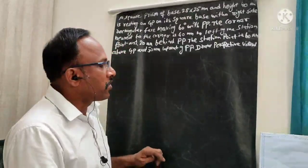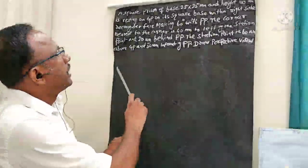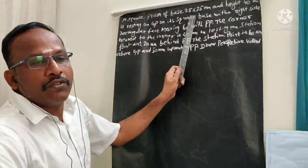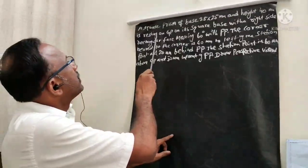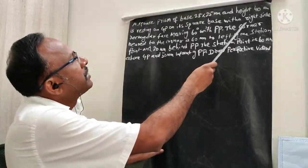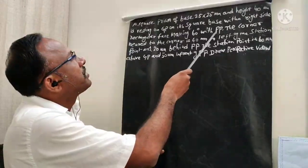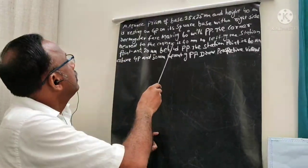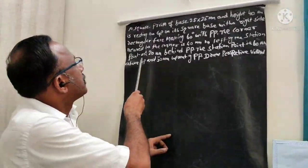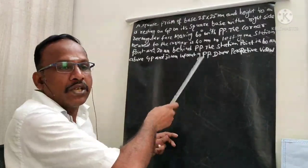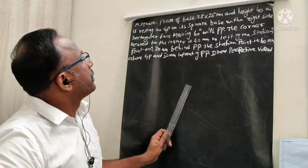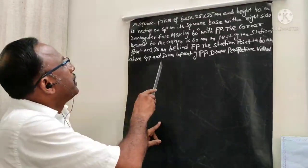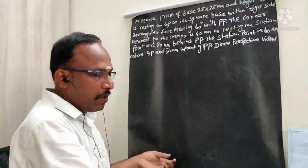Welcome to today's engineering drawing class. Today we are going to solve one problem in perspective view. The problem is: a square prism of base 25x25 mm and height 40 mm is resting on GP (ground plane) on its square base, with a right side rectangular face making 60 degrees with PP. The corner nearest to PP is 40 mm to the left of the station point and 20 mm behind PP. The station point is 60 mm above GP and 50 mm in front of PP. Draw the perspective view.